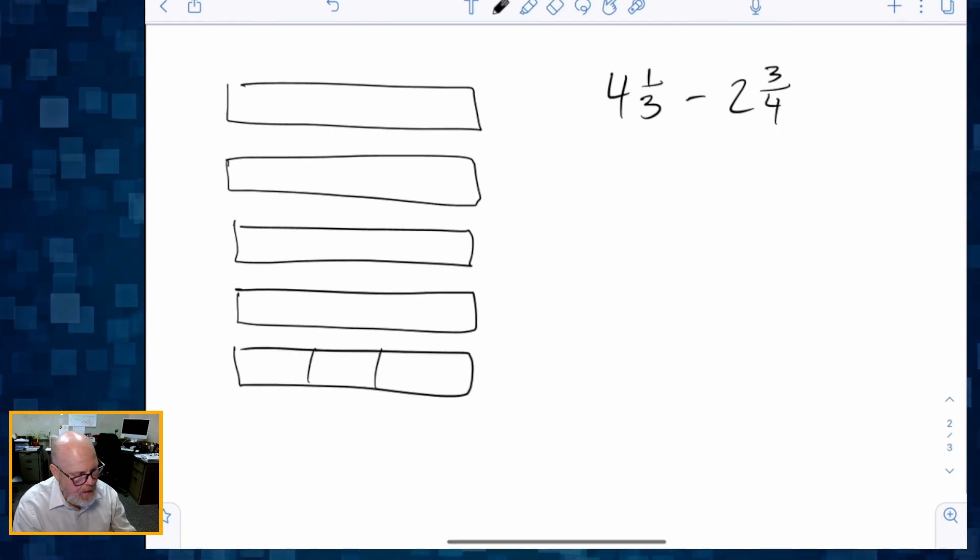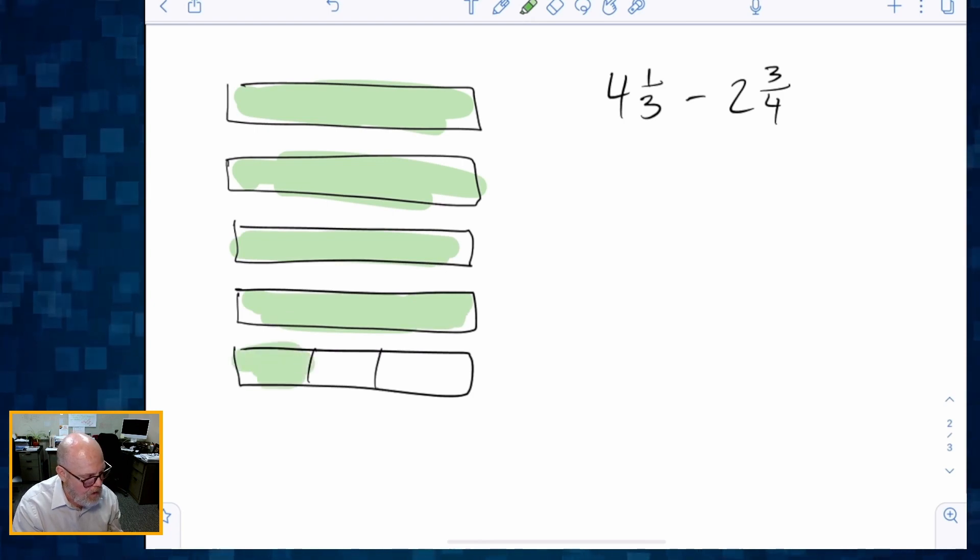Now, one third means I'm going to have to shade in, not the entire thing. So there's one hole, there's two holes, there's three holes, there's four holes, and then one third. All right, so there we go. There's our 4⅓.